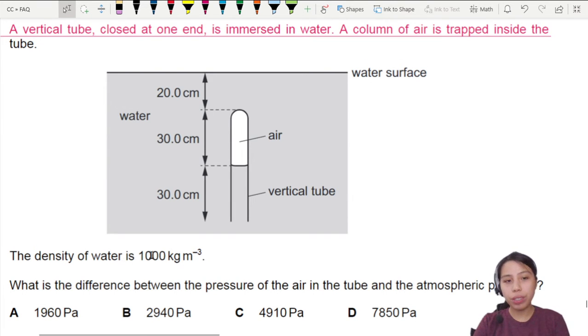The density of water is given to us 1000. What is the difference between the pressure? Pressure is delta P. So we're looking at the difference of the air in the tube and the atmospheric pressure.